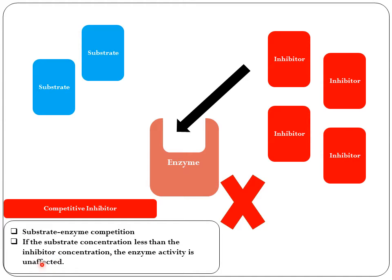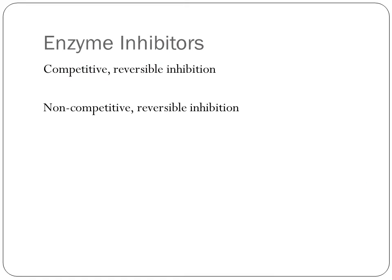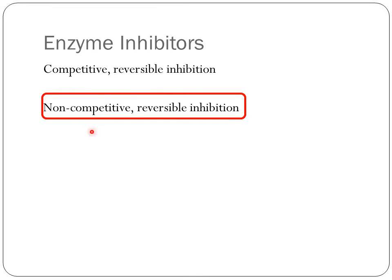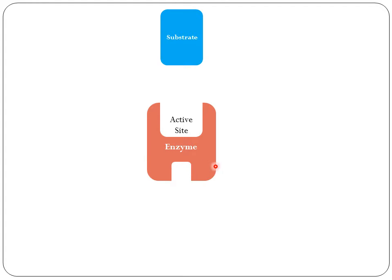This was the competitive inhibition mechanism. Now let's look at non-competitive inhibition. As I said before, both types are reversible. This is the enzyme again with its active site and the inhibitor. What differentiates non-competitive from competitive inhibition is the mode of action — here the inhibitor does not have a similar shape to the substrate.